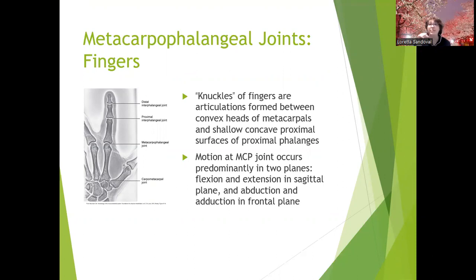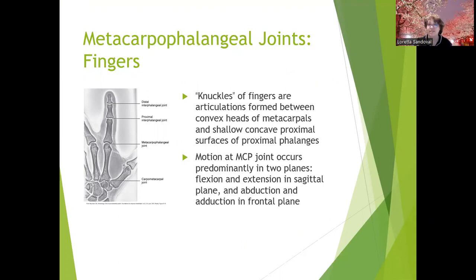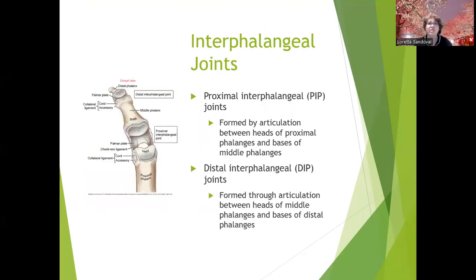The knuckles of the fingers are the articulations formed between the convex heads of the metacarpals and the shallow concave proximal surfaces of the proximal phalanges. At the metacarpophalangeal joints, motion occurs predominantly in two planes: flexion and extension in the sagittal plane, and abduction and adduction in the frontal plane — just like many of our other joints. The thumb is the only one that's different.